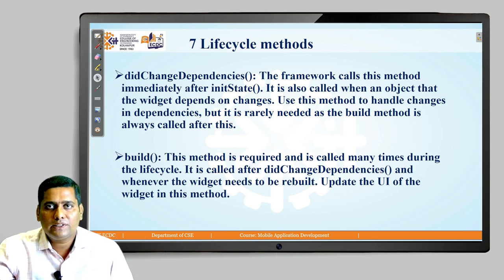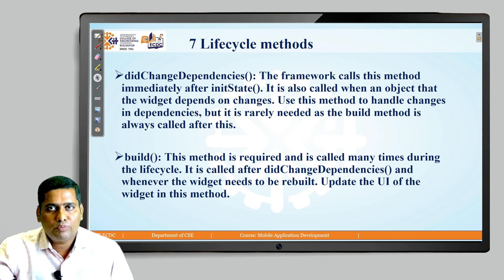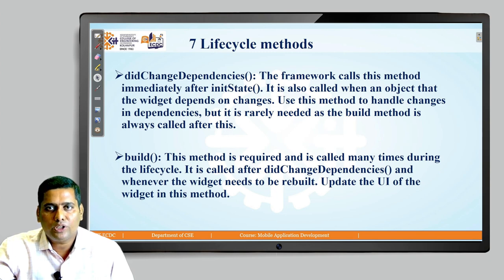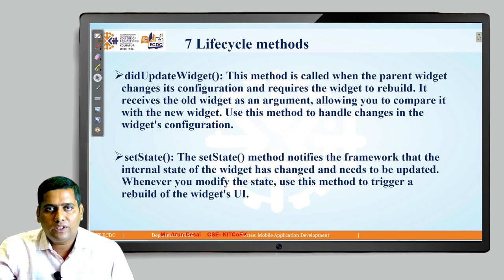The didChangeDependencies method is called immediately after initState and also when an object the widget depends on changes. Use this method to handle changes in dependencies, though it is rarely needed since the build method is always called after it. The build method is the most important method in the lifecycle — it is required and called many times. It is called after didChangeDependencies and whenever the widget needs to rebuild; update the UI of the widget in this method.